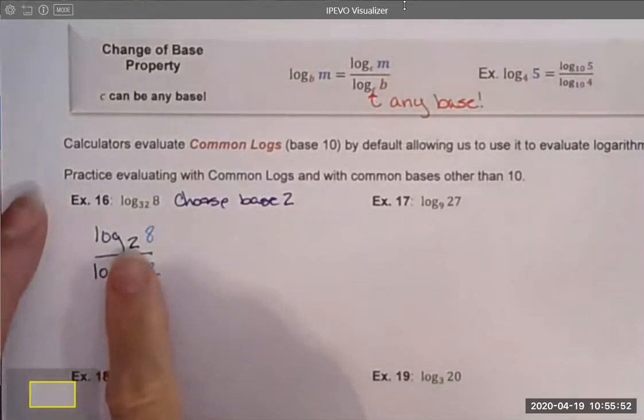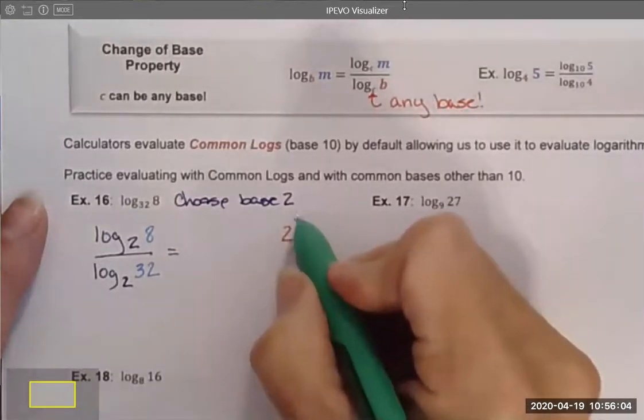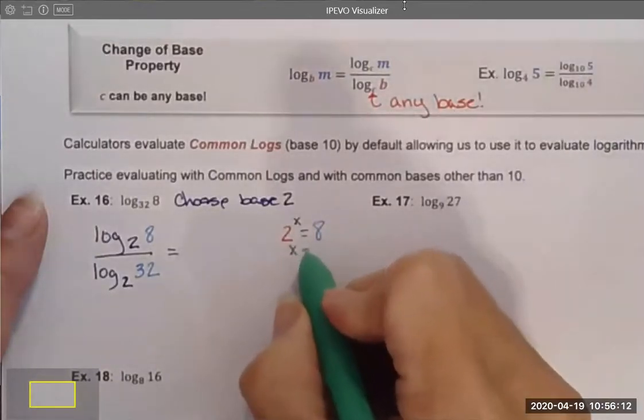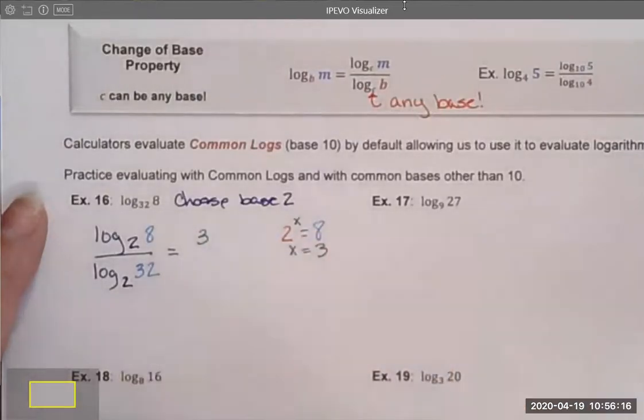I can evaluate each of these log statements independently. I ask myself, 2 to what power is 8? I'm going to write that over here so you can see my methodology, my thought process. 2 to some power is going to be equal to 8. And I can do that pretty quick. I learned that x is equal to 3. 2 to the third power is 8. So I'm going to rewrite log base 2 of 8 as a 3.